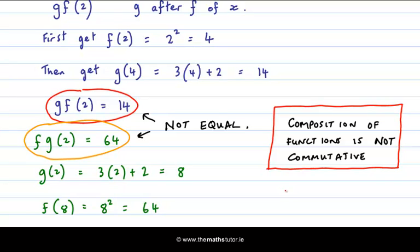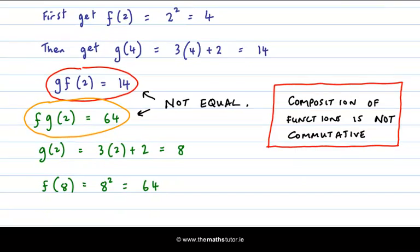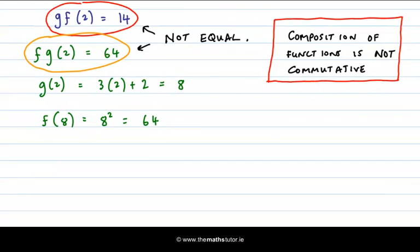So for example, multiplication is commutative because when we multiply 3 times 5, it's the same as 5 times 3. But it's not the same when we divide. So when we divide 8 by 2, it's not the same as dividing 2 by 8. So division is not commutative and neither is composition of functions. So be careful with that.